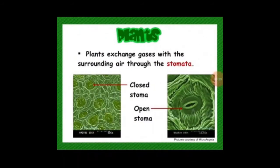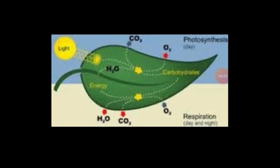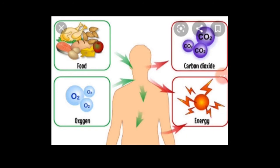Plants exchange gases with the surrounding air through tiny pores present in the leaves called stomata. Plants take in carbon dioxide gas and give out oxygen gas. All living things need oxygen to get energy from their food. Oxygen burns the food to produce energy, and this energy is used for growth and to repair damaged parts.